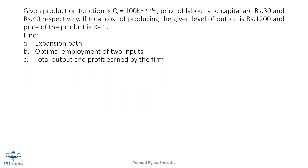Hello. The given production function is Q equals 100K to the power 0.5 multiplied by L to the power 0.5. The price of labor and capital are rupees 30 and 40 respectively. If the total cost of producing the output is rupees 1200 and the price of the product is rupee 1, find: (a) expansion path, (b) optimal employment of two inputs, (c) total output, and (d) profit earned by the firm.